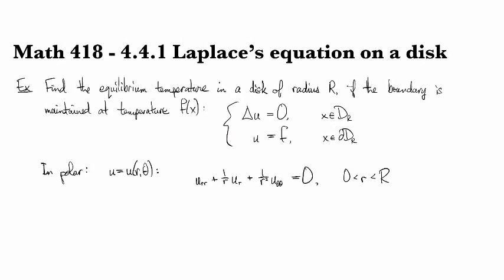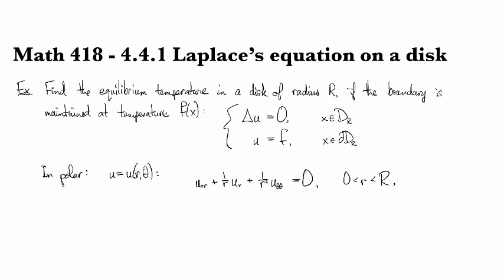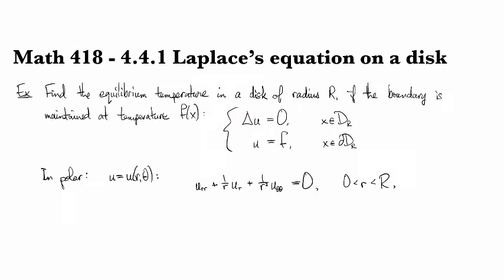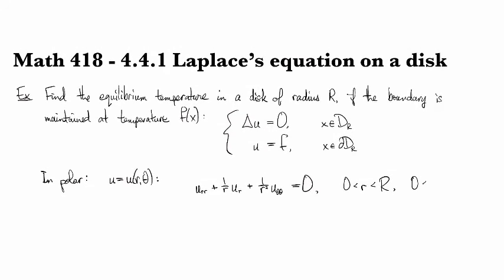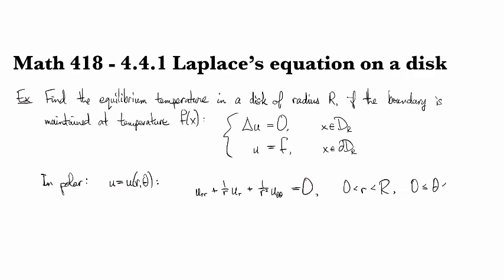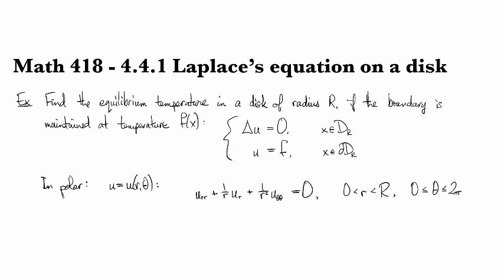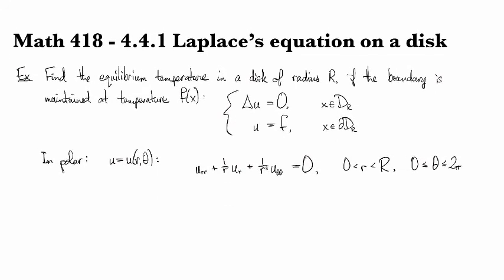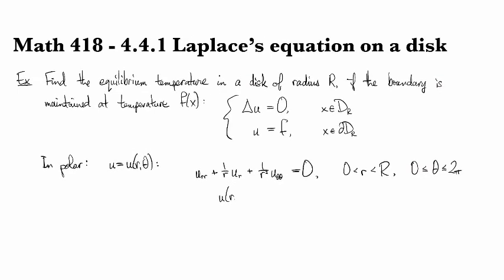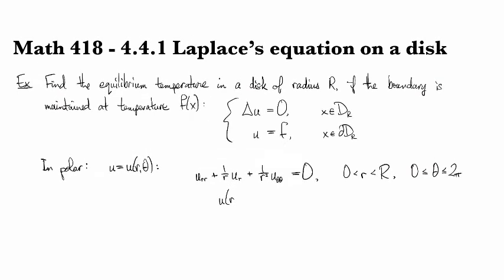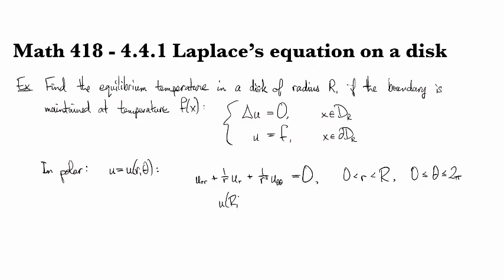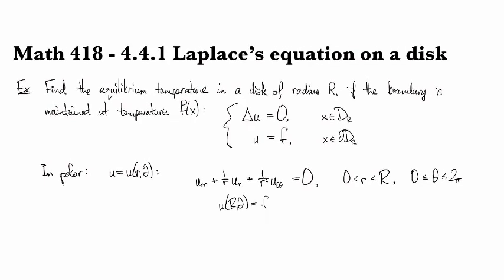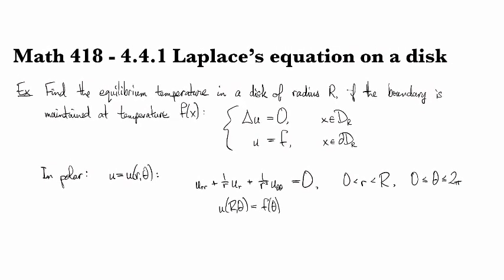This is inside the disk, so r is strictly less than R, and theta goes all the way around. Our boundary condition is that u at R for any theta should be given by the F value for that particular theta.